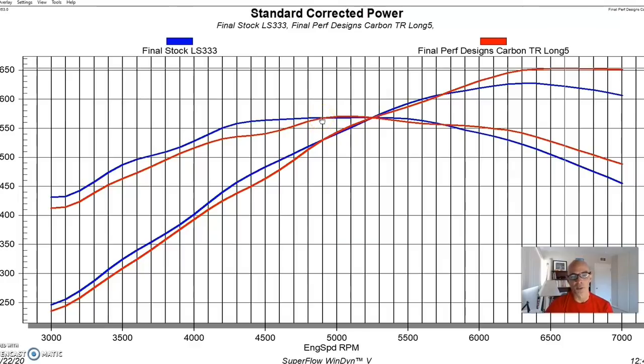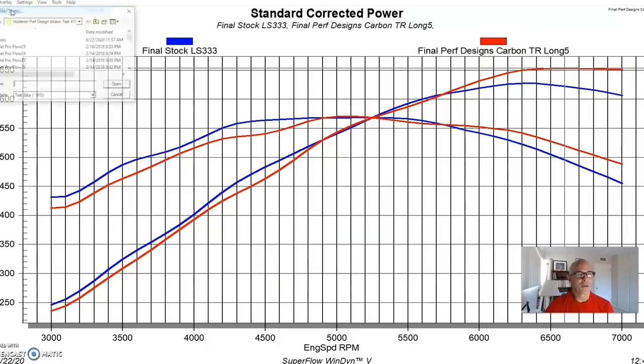As we have come to expect from any of the intake tests, the factory LS3 manifold makes really good power for most of the curve. In this case, it's better than the Carbon TR version up to 4900 RPM, and we've come to expect that because of the added runner length offered by the LS3 intake. But then the Carbon TR actually does very well because some of those manifolds only make more power than the factory LS3 above 6000 RPM. So this was a good compromise and it worked pretty well, made good power.